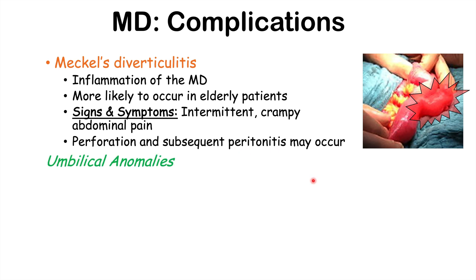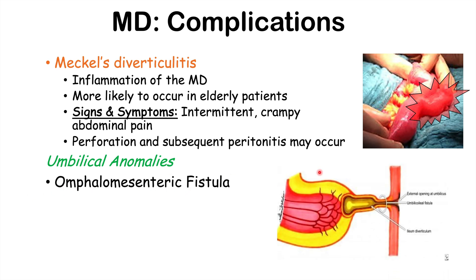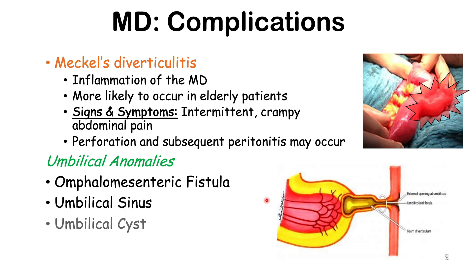Other umbilical anomalies associated with Meckel's diverticulum include an omphalomesenteric fistula — a fistula connecting the diverticulum to the outside of the abdominal wall — as well as an umbilical sinus, an umbilical cyst, and a fibrous band connected to the abdominal wall. Some patients with Meckel's diverticulum may also develop a neoplasm such as a leiomyoma.